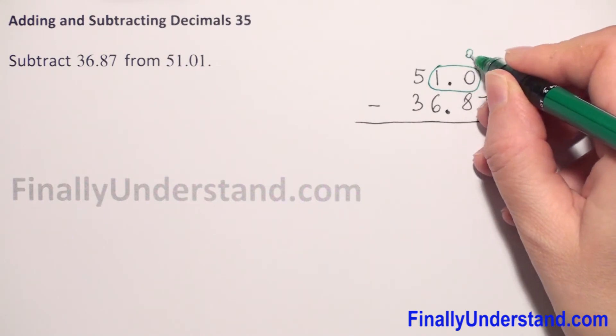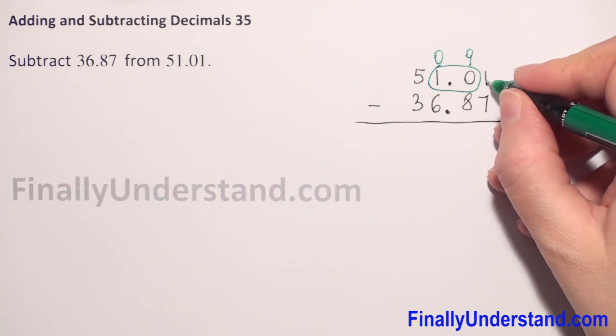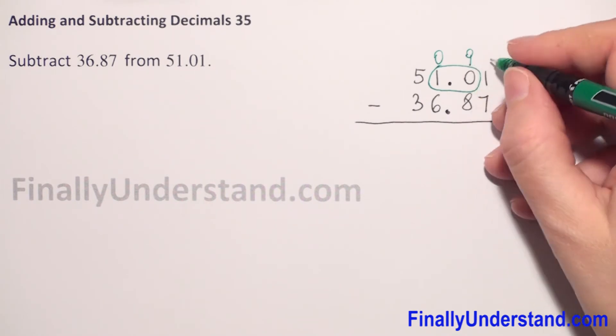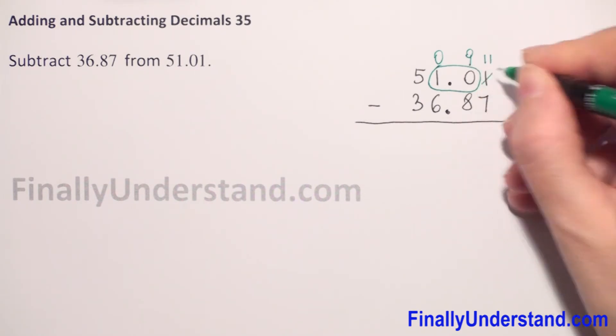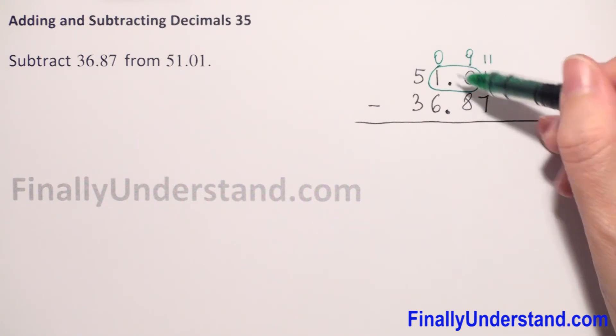When we borrow one from the next digits, we have 11 at the end. We check: 11 minus 7, okay. 9 minus 8 will be okay. 0 minus 6, no, we have to borrow one from the next digits.